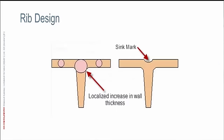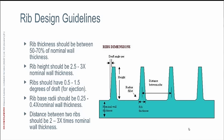The next thing I want to talk about is rib design. When you have supporting ribs that come off the nominal wall surface, you tend to create a localized increase in wall thickness. If that localized increase is big enough, it can cause sink marks. You have such a thick area that when the part starts to cool down, the plastic material shrinks in upon itself and pulls in the surface of the part — creating what we call a sink mark. If you follow proper rib design guidelines, you should be able to avoid sink marks altogether.